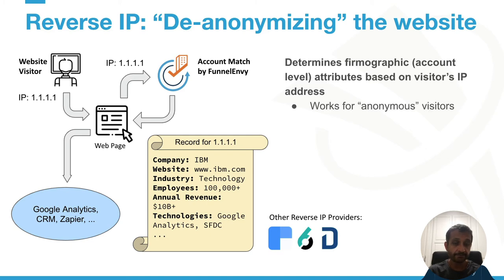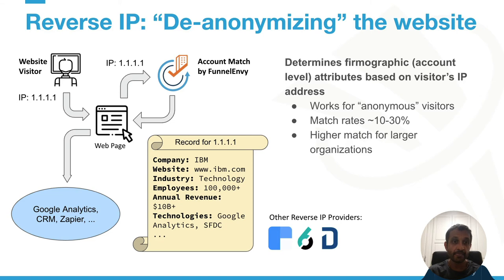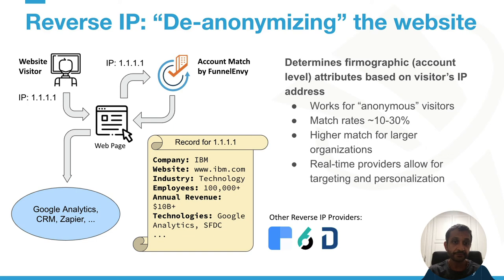Here are a couple of things you should know. First, as mentioned, they work for anonymous visitors and don't rely on someone filling out a form on your site. They will not match 100% of traffic — match rates typically vary around 10 to 30% and can vary significantly based on the nature of the traffic. The good news is that for larger organizations with known IP blocks, you tend to see much higher effective match rates. And that's good because most of the time our high-value target accounts tend to be comprised of larger organizations. Finally, some providers are better at real-time responses, which allows for not just intelligence but also targeting and personalization on your website.